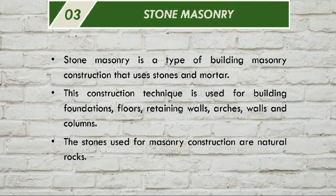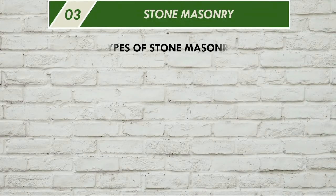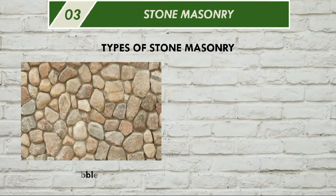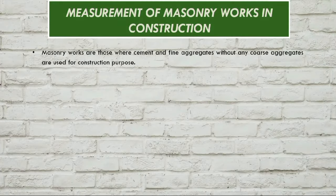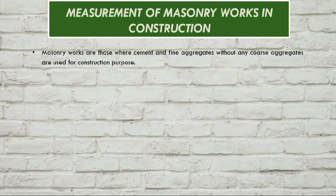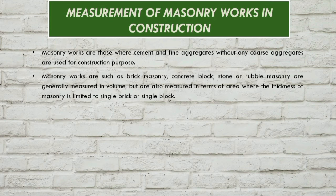The stone used is generally natural rock. Types of stone masonry include random rubble masonry. Stone masonry is used in normal structural applications, and most often this masonry — along with brick and concrete blocks — is measured in cubic meters, because the thickness involved is substantial.